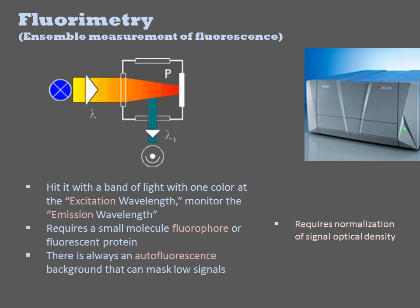This autofluorescence background can mask low signals. Like cytometry and microscopy, you must normalize the signal against some standards such as white cells in fluorimetry and spectroscopy. Additionally, you must normalize for cell density.